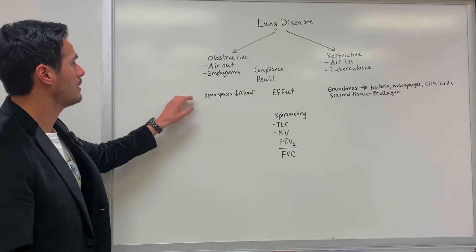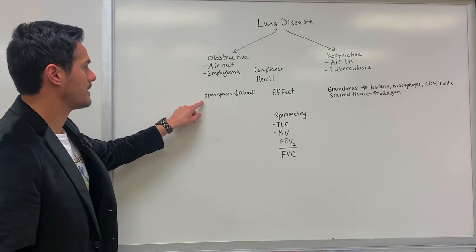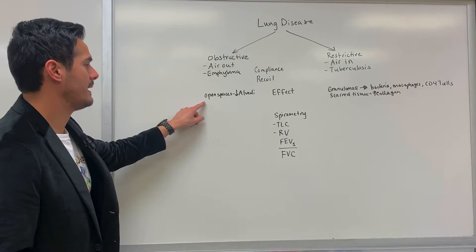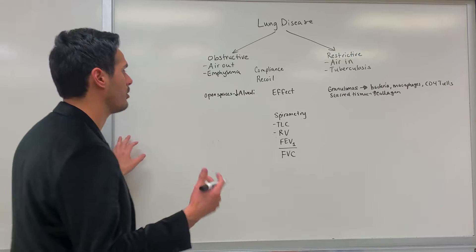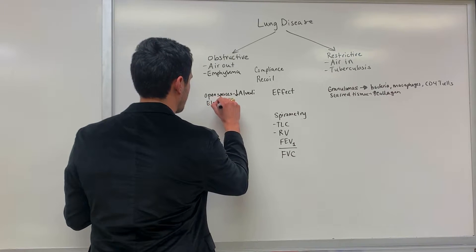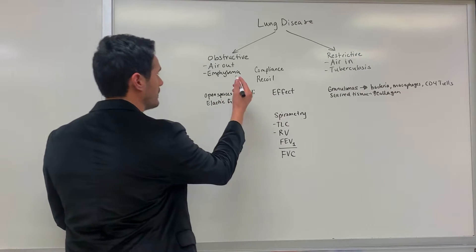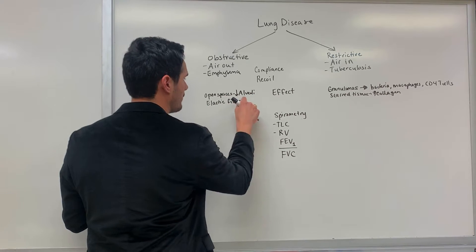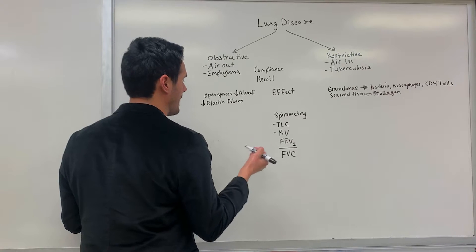Moving on to obstructive lung disease — with emphysema there are reduced alveoli. When we looked at the pulmonary lobule model, we saw lots of elastic fibers. But for emphysema, because there's a reduced amount of alveoli, there's also going to be a reduced amount of these elastic fibers.